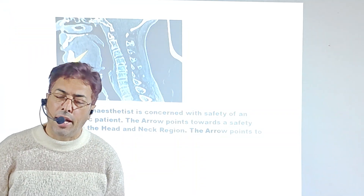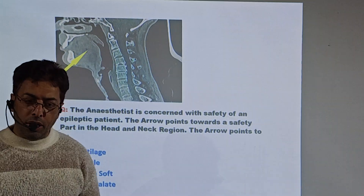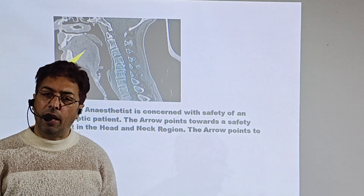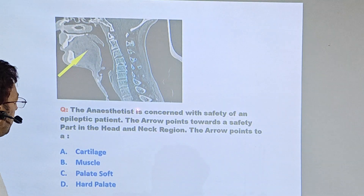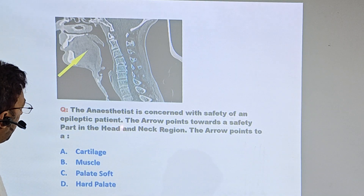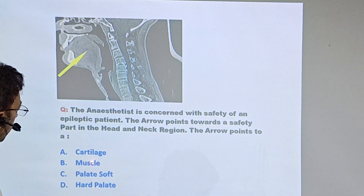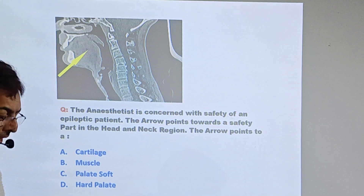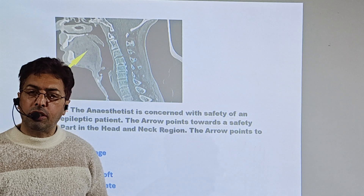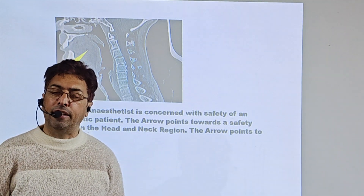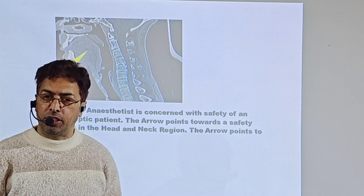You can see a figure on the board — a question based from anesthesiology. The question reads: the anesthesiologist is concerned with the safety of an epileptic patient. The arrow points towards the safety part in the head and neck, pointing towards cartilage, muscle, and palate — soft and hard palate. This is a CT scan of the head and neck region wherein you are asked to identify the structure.